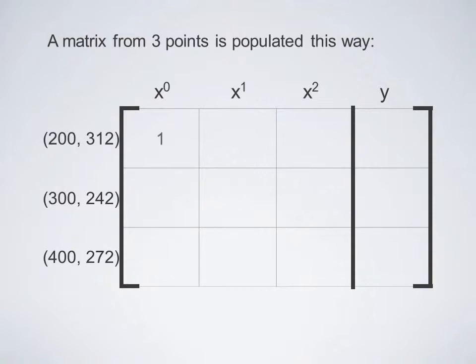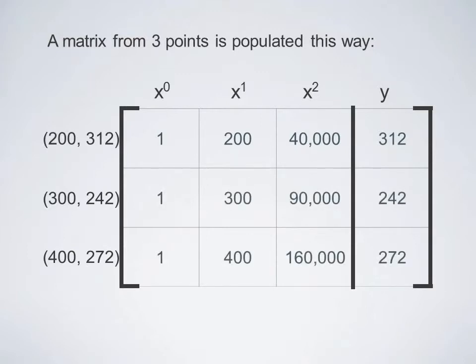In the first row, first column, I put a 1. That's because 200 raised to the zero power is 1. And in the next column, I put 200 because 200 to the first power is 200. And in the third column, I put 40,000 because 200 squared is 40,000. And in the y column, I just put the y value. Let's do that for the rest of the rows. And so that is the completed matrix.